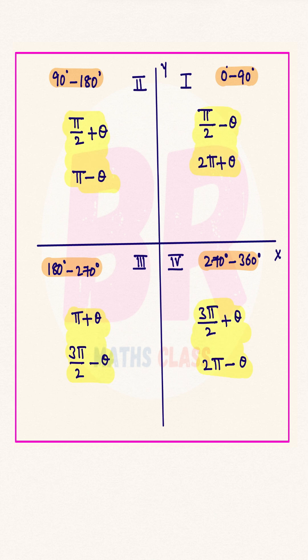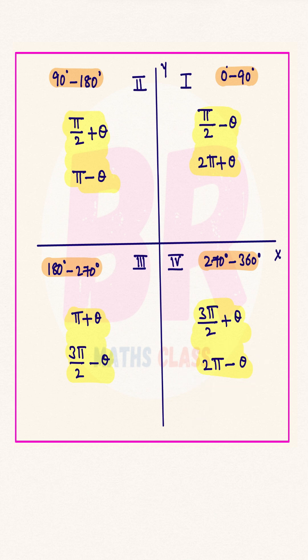It is important for you to know these things. If someone suddenly asks which quadrant 2 pi minus theta is in, you immediately need to realize that 2 pi minus theta lies in the fourth quadrant.